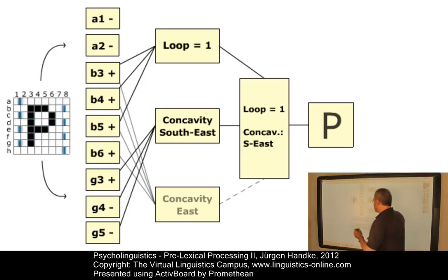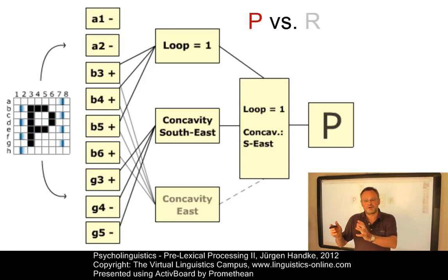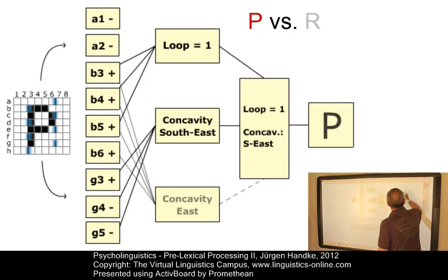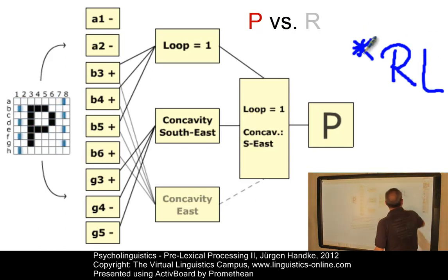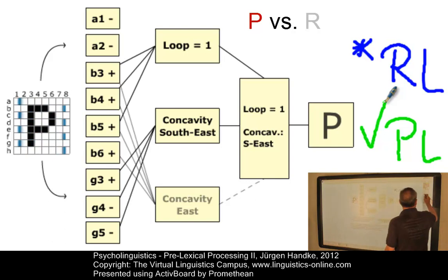The process of feature combination is heavily influenced by higher levels of analysis. The discrimination of P from R, for example, in a word such as play, is phonotactically and graphologically influenced by the fact that initial clusters such as RL do not exist, but PL do exist. So, this is then information from higher levels.